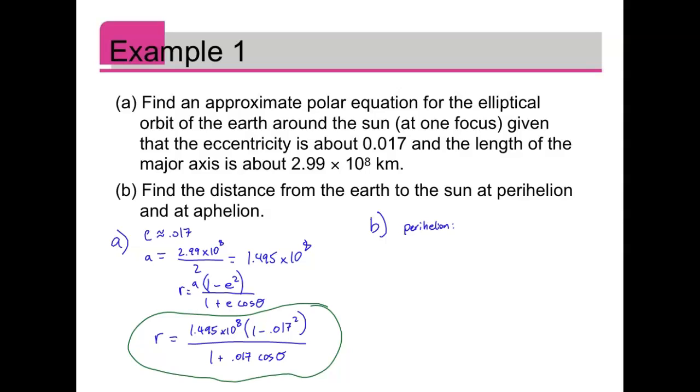All right, so I have perihelion is 1.495 times 10 to the 8th times 1 minus 0.017. It's an approximation just because our eccentricity is an approximation, but it's pretty precise.